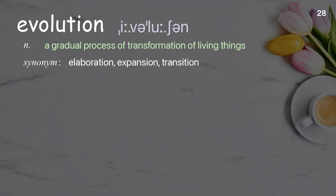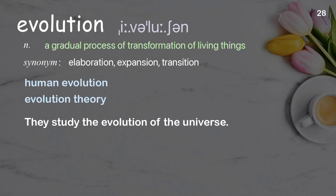Evolution: a gradual process of transformation of living things. Examples: human evolution, evolution theory. They study the evolution of the universe.